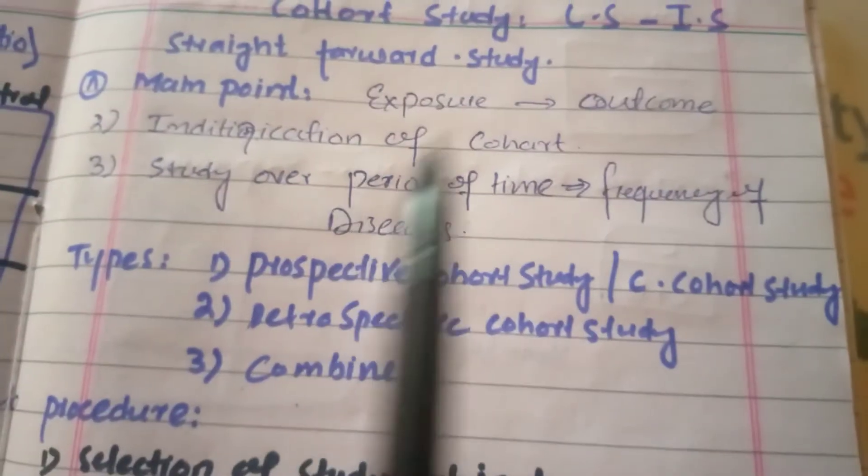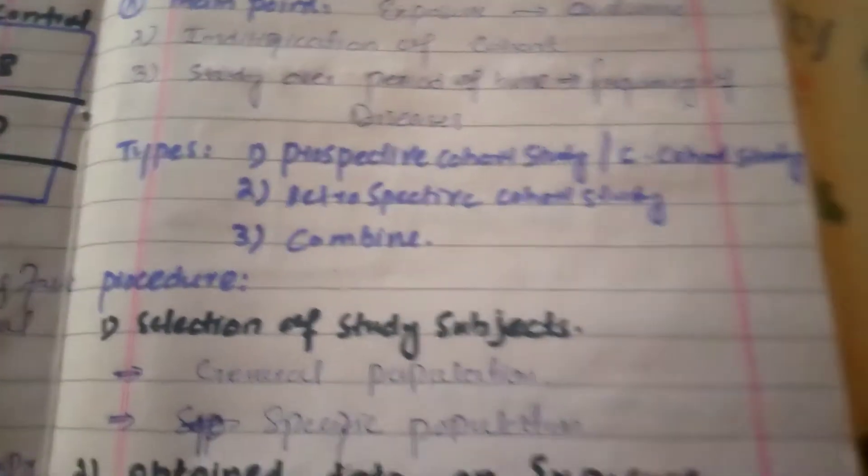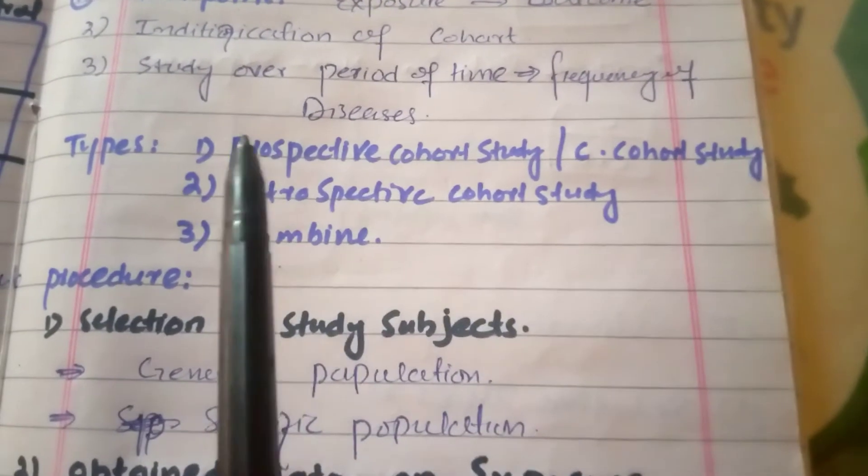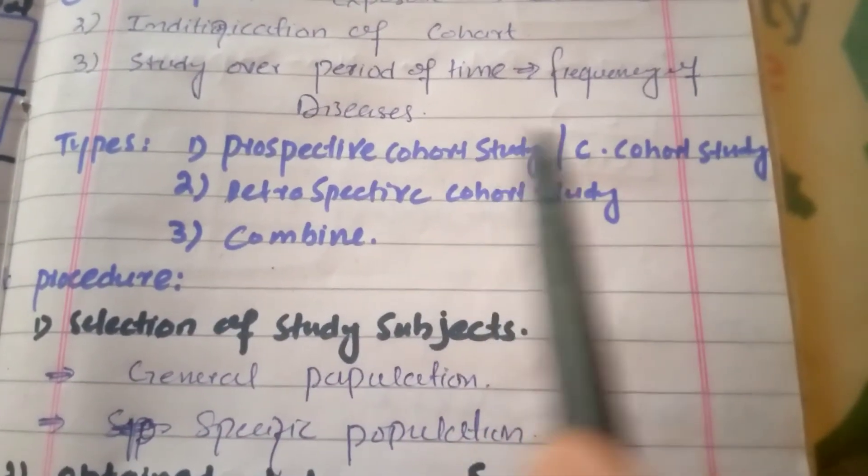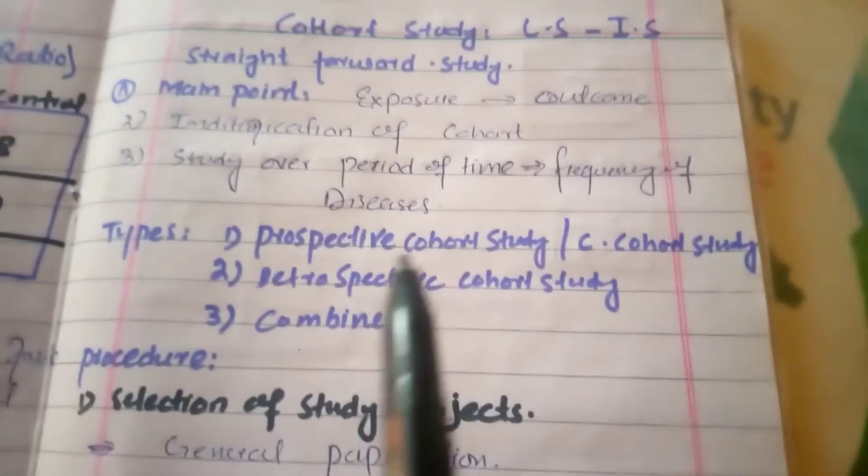We will study over time to determine the frequency of disease among the community. Types include prospective cohort study, current cohort study, retrospective cohort study, and combined. Prospective cohort study we do when we do not have disease. Retrospective study we do when we have disease.